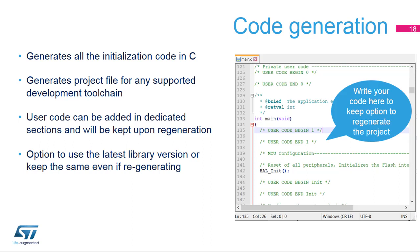First, check the settings in the project menu of the main window. One of the several supported development tools can be selected to take over the generated project, including toolchains from Keil, IAR, and Atollic. User code must be kept between the constraints of the user code comment blocks in order for the initialization settings to be modified using STM32CubeMX without affecting the custom code. See the next slide to see how to activate this option.